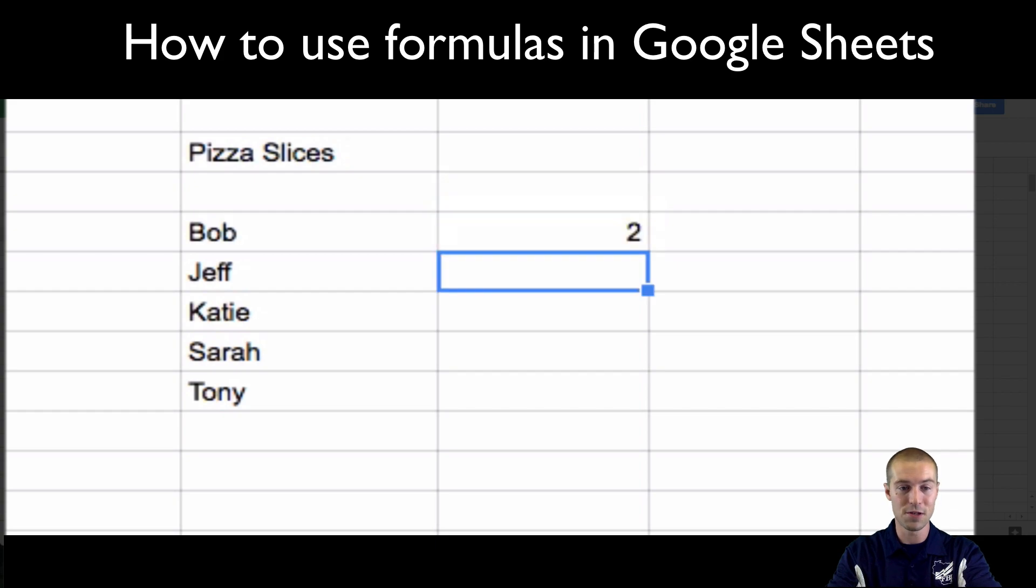Let's say Bob ate two slices, Jeff ate two, Katie ate three, Sarah ate two, Tony ate one. Let's just use that as some random sampling. Those are some random names.